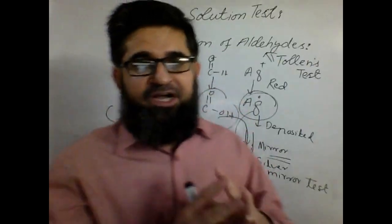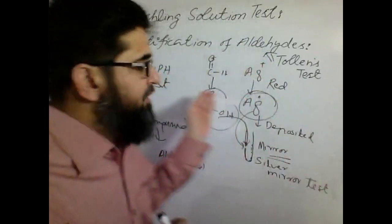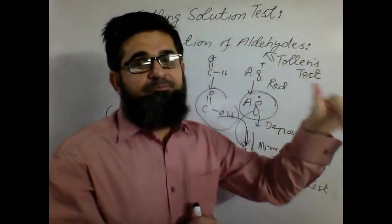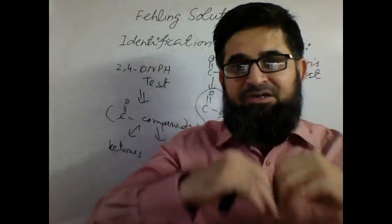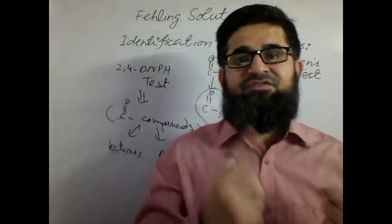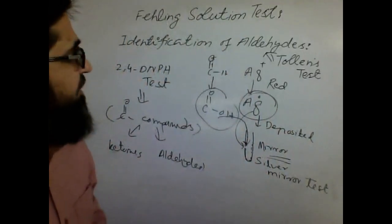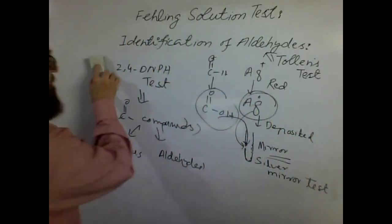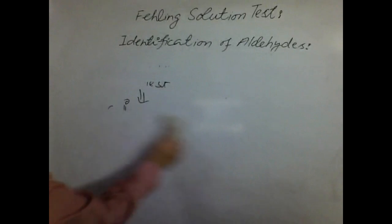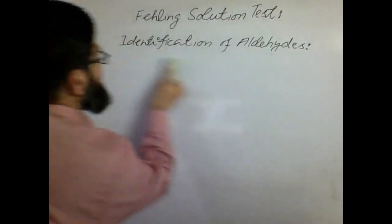Sometimes you want to be more cautious. If your 2,4-DNPH test is positive, you can apply both Tollens as well as Fehling's to confirm whether aldehydes are really present or absent. You can apply both tests one by one. We have already discussed 2,4-DNPH test, we have already discussed Tollens test, and now today I am going to discuss the Fehling's solution test.